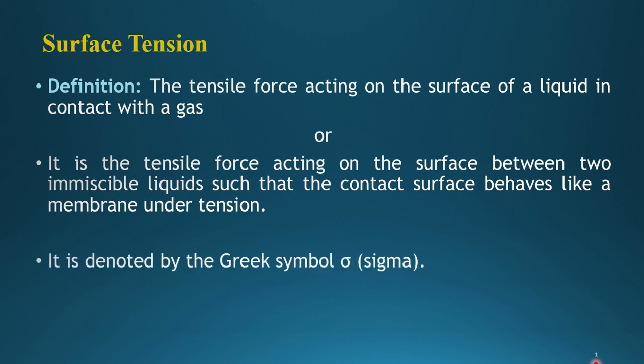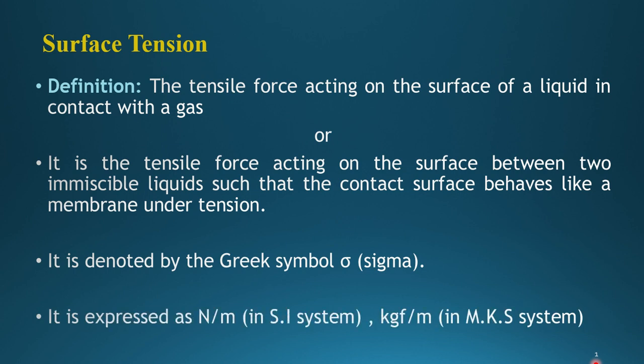Surface tension is denoted by the Greek symbol sigma (σ). It is expressed as Newton per meter, since it is the tensile force acting per unit length on the surface. In the SI system it is Newton per meter (N/m), in the MKS system it is kilogram-force per meter (kgf/m), and in CGS units it is dyne per centimeter.